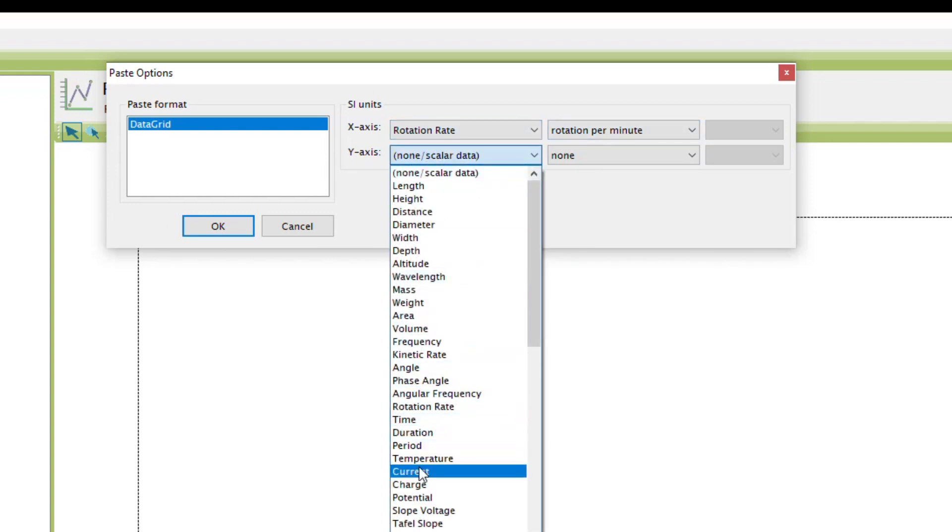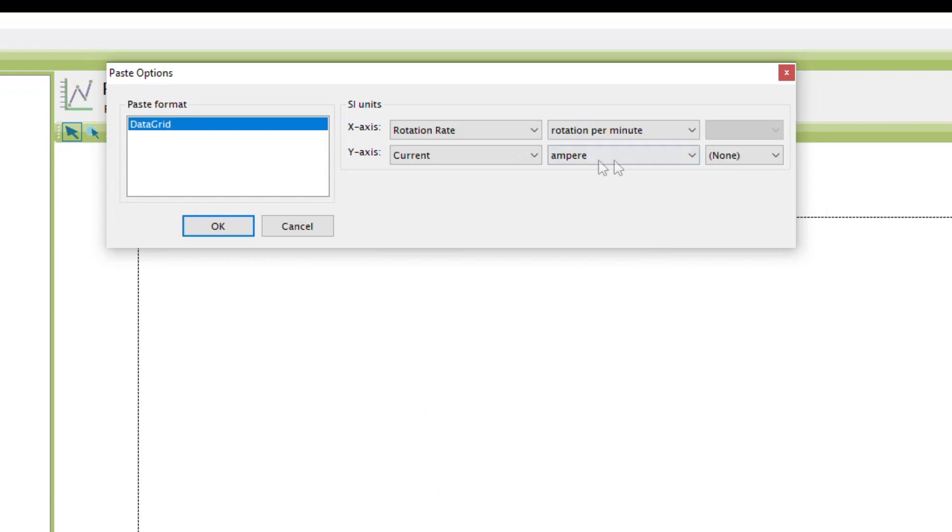And then on the y-axis, the units are current. They're in amps, but I actually have microamps, so the current's in amps, but I can actually change the prefix to micro.